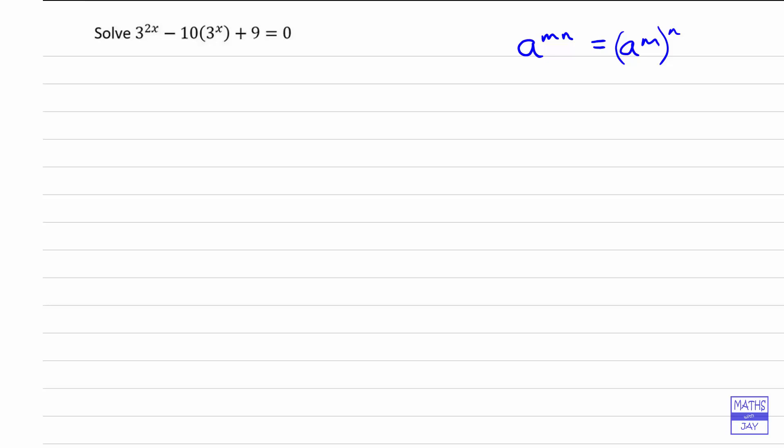So in this particular question, what we want to do is to rewrite it so that the unknown only appears in one place. What we're thinking about is at the moment we've got 3 to the 2x and 3 to the x, so the unknown is appearing in two places and in two different ways.